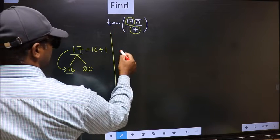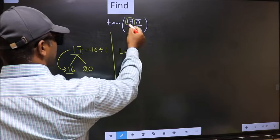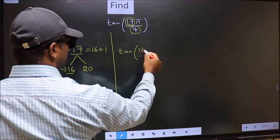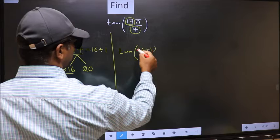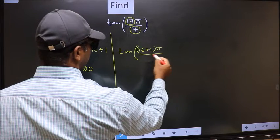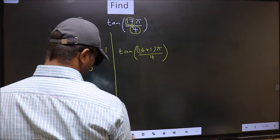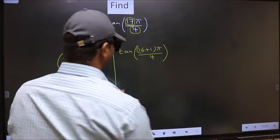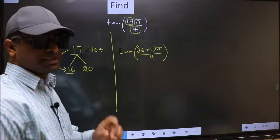So, this will become tan. In place of 17, now we should write 16 plus 1, pi by 4. This is your step 1.